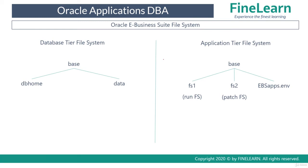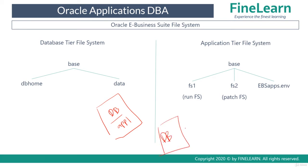Now let's have a brief look at the layout of the file system. Oracle eBusiness Suite contains the database tier and the application tier. If you are using the same node to install both, you'll be logging into the same machine to administer both. But if you are using multiple nodes — one for the database tier and one for the application tier — you'll log into the respective nodes to manage each tier.